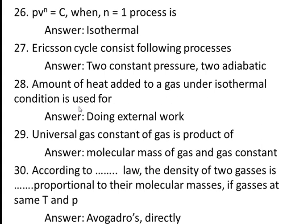Twenty-eighth question: amount of heat added to a gas under isothermal condition is used for — answer: doing external work. Since the process is carried out at constant temperature, there is no increase in internal energy. Since the process is isothermal, the change in internal energy is zero, so all the heat supplied is used for doing external work only.